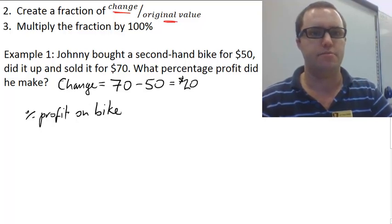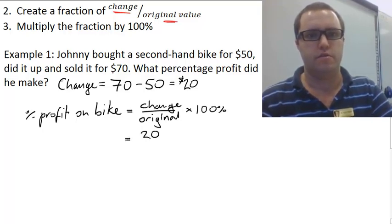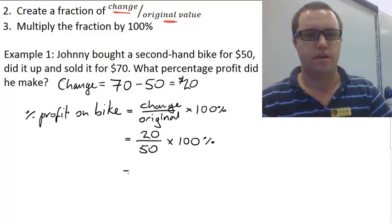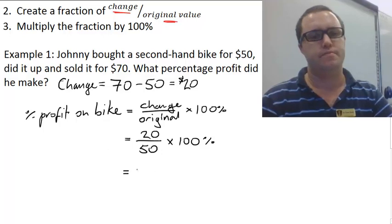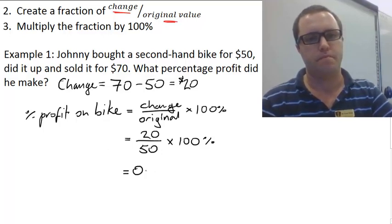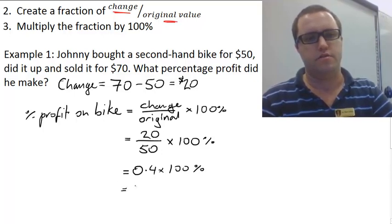So the percentage profit on the bike is going to be equal to the change over the original, which is 20 over 50, times 100%. If we chuck this in our calculator, 20 divided by 50 gets us 0.4, times 100%, which is 40%.